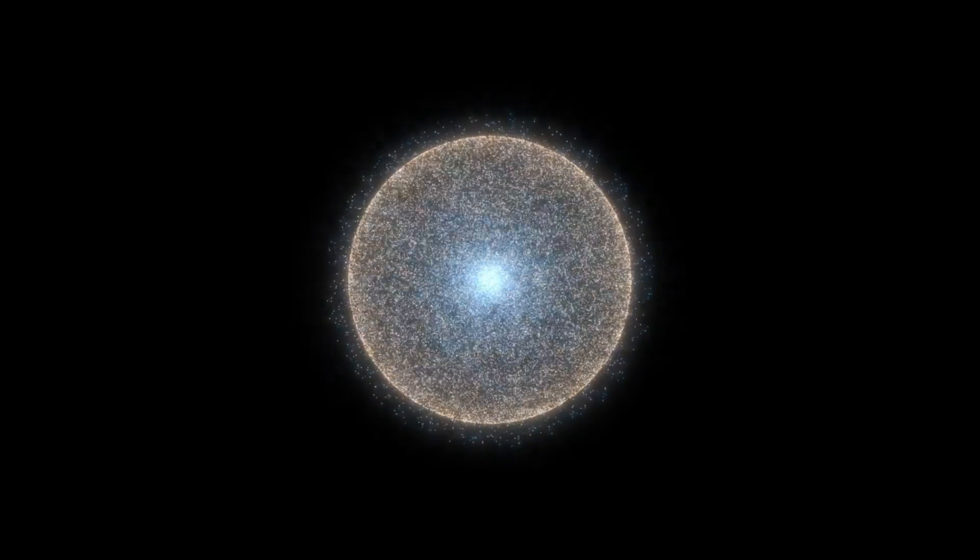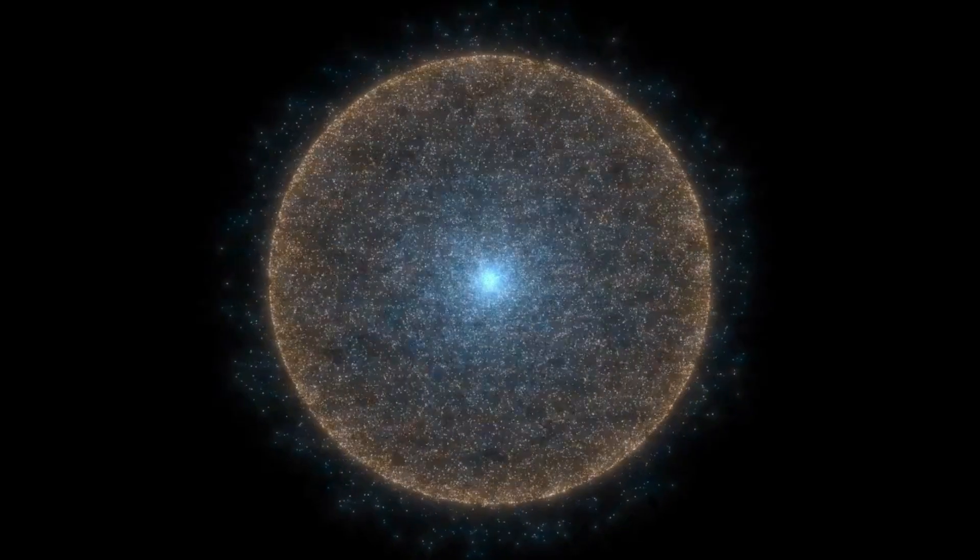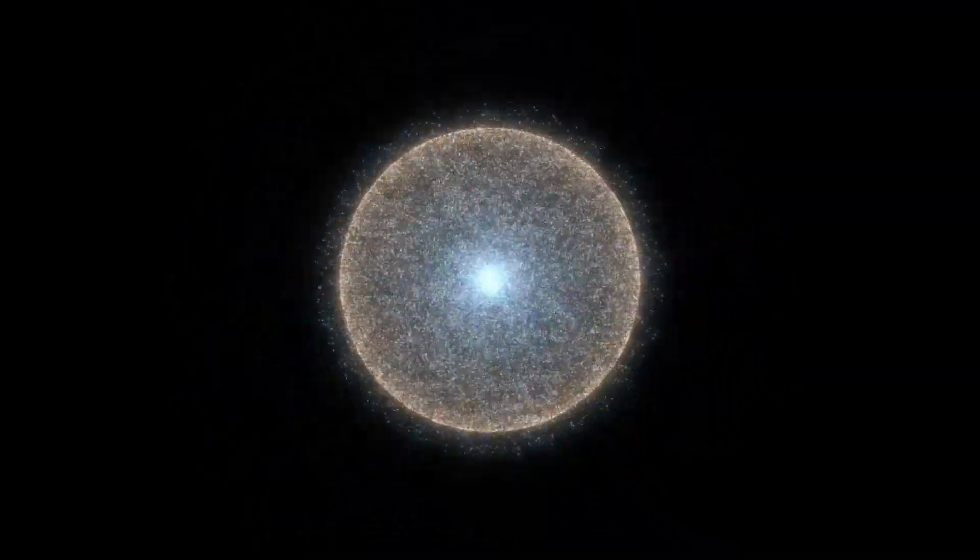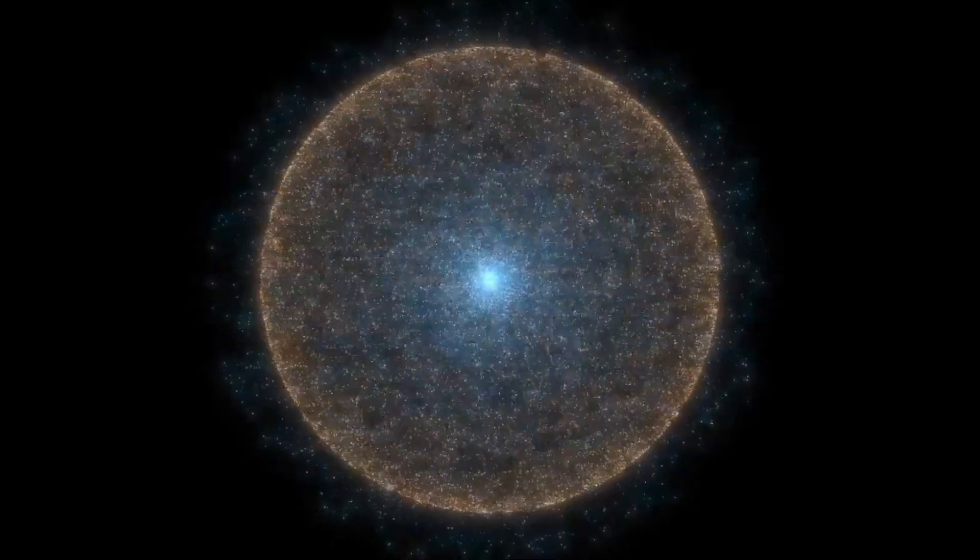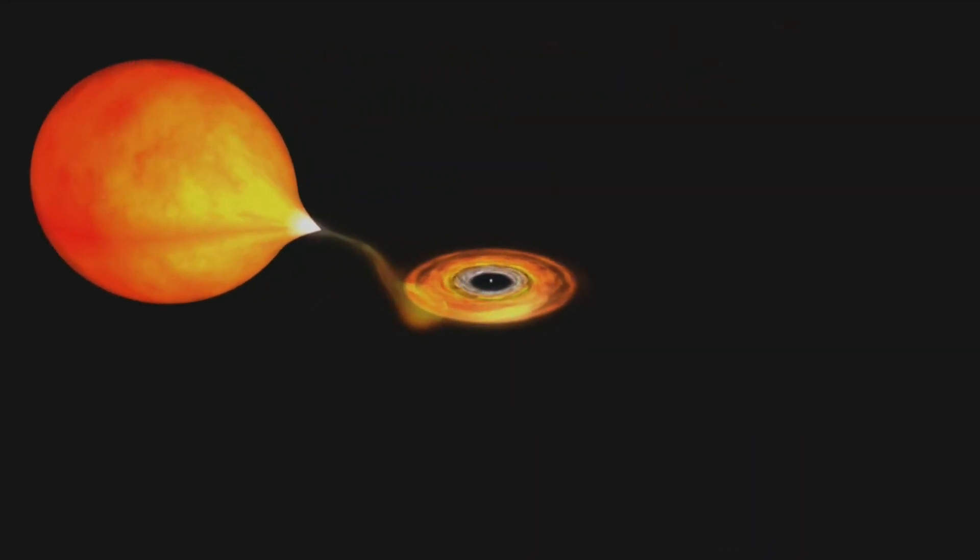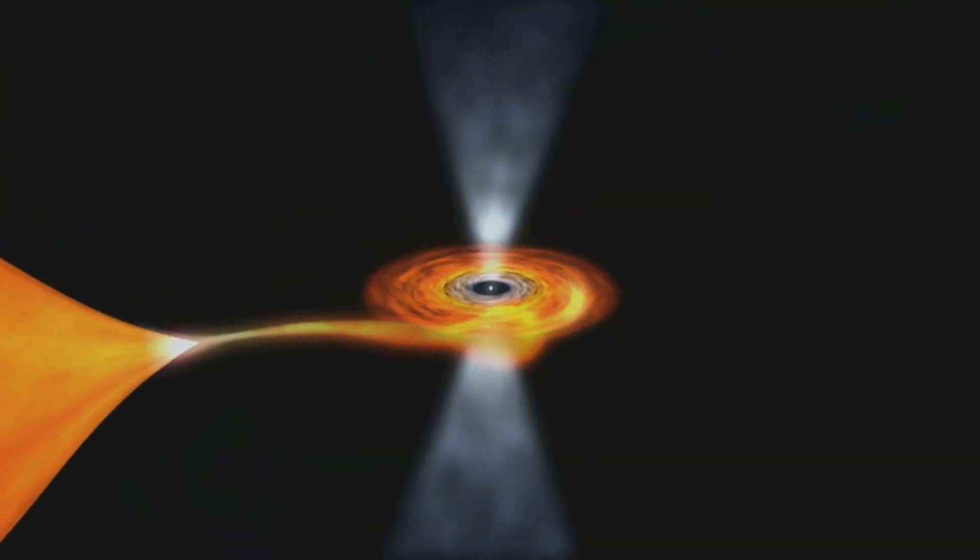Another important point to be noted here is that only neutron stars can experience starquakes. Magnetars and pulsars are two types of neutron stars that experience starquakes. And so, a black hole cannot have a starquake. Because it is a black hole and not a neutron star.